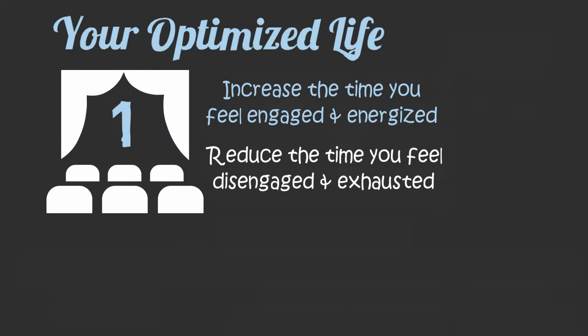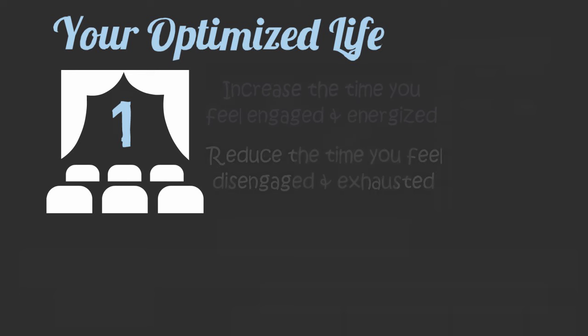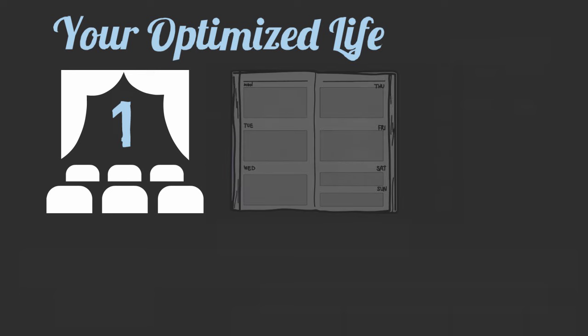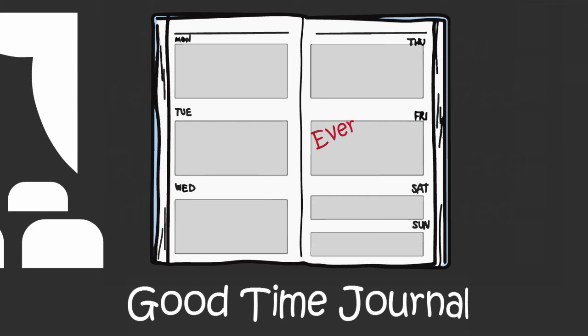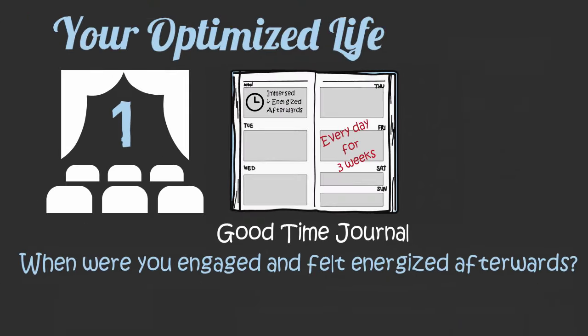Like Michael, you need to realize that there are times during your day, even days that you hate, when you're excited and focused and having a good time. To capture these moments, start what the authors call a good time journal. At the end of every day for the next three weeks, write down the times during the day you were completely immersed in what you were doing and felt energized afterwards. Try to get as specific as possible.